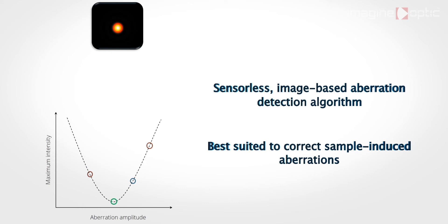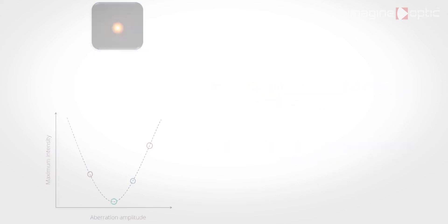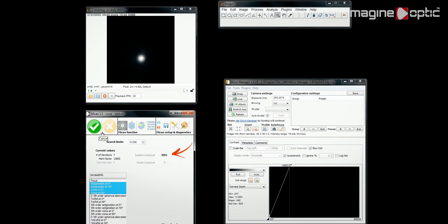This step can take up to 2-3 minutes, but it is very powerful and usually provides the best results you can ever get. In this example, the iterative image-based algorithm improves the signal intensity by 30%, from 9000 to 12000 counts.